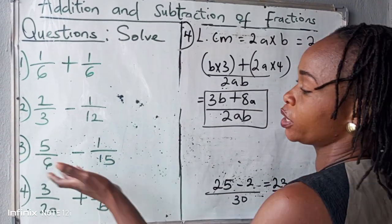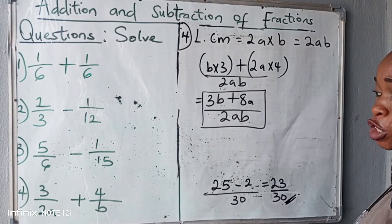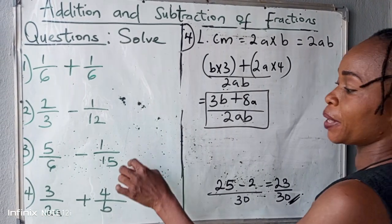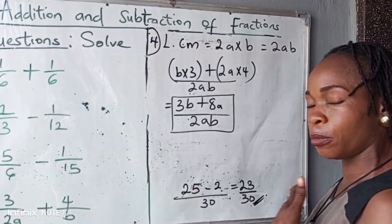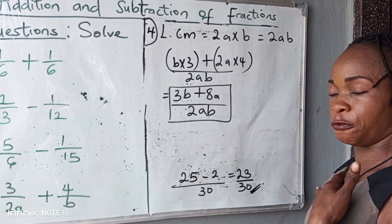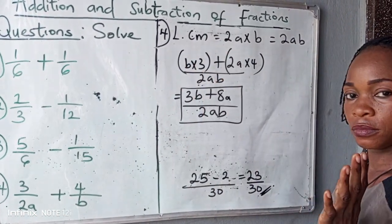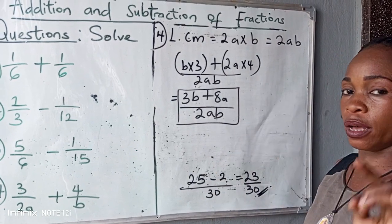When you have two different numbers as your denominators, but the bigger number is not a multiple of a smaller number, what do you do? Write out the multiple of six. Write out the multiple of fifteen. Now, pick. The common one becomes your LCM.